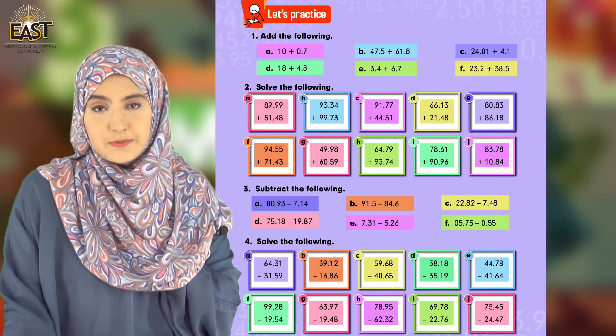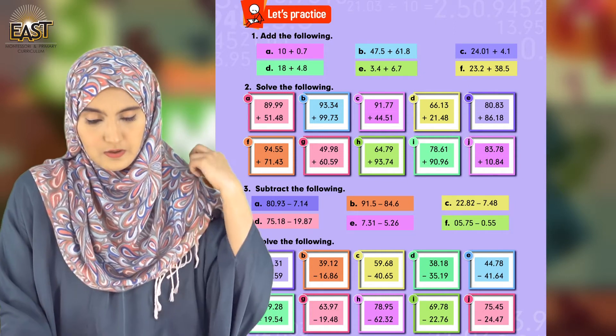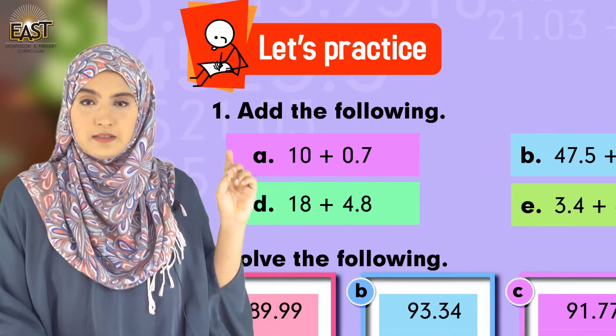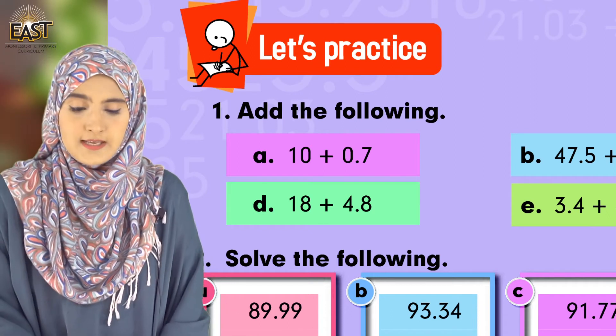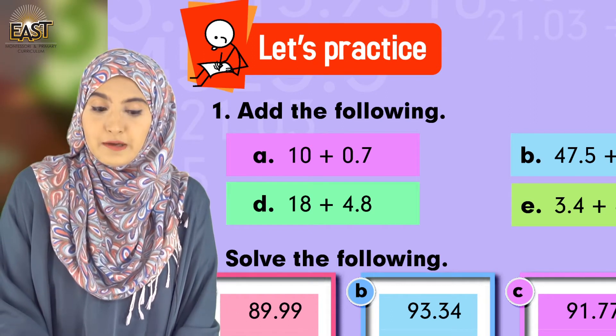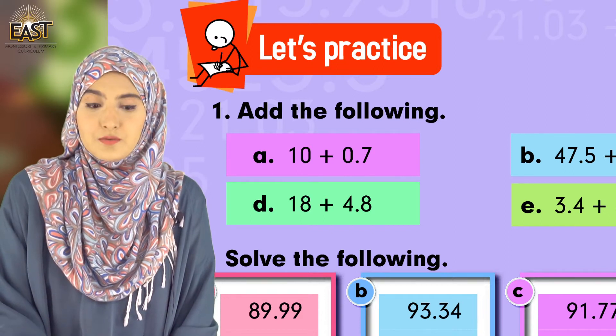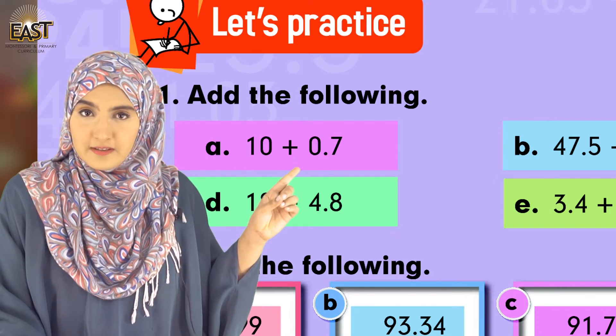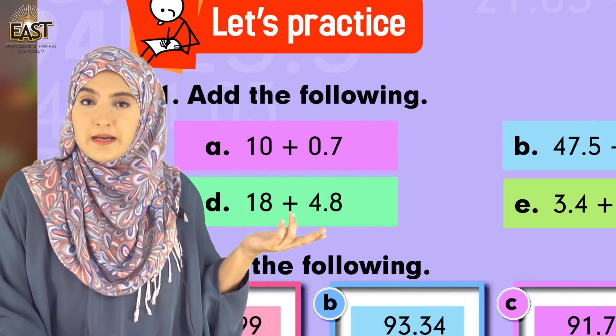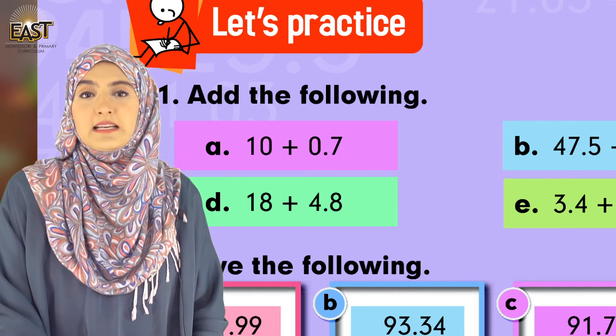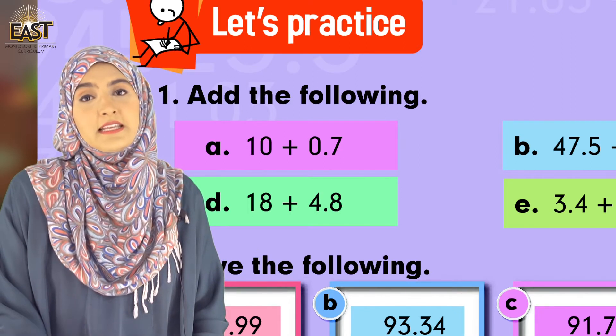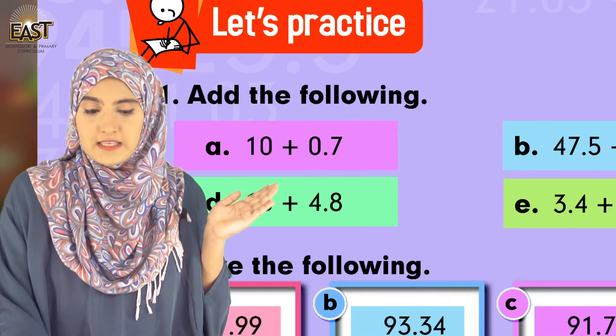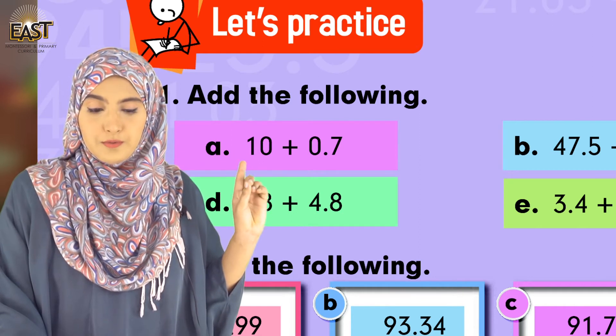Let's practice which is given on page 89. Add the following - question number one. Part a: 10 plus 0.7. How will we solve it? We discussed in the previous class - with 10 we will place the decimal point: 10.00, so that our question is balanced. You can see here 10.0 plus 0.7.